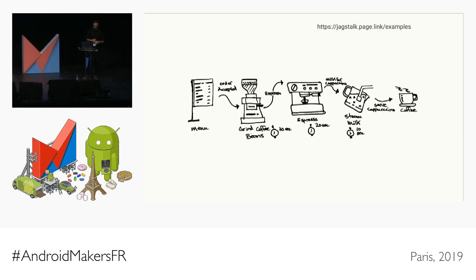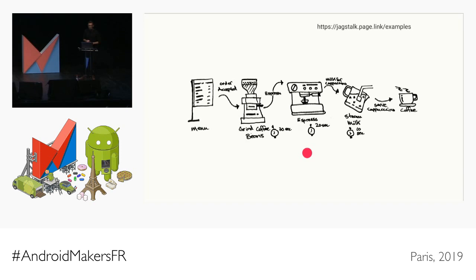Let's go back to the analogy. This first version is a very simple coffee shop — just one barista making only cappuccinos. A customer comes in, places an order, the barista takes it, walks over to the coffee grinder, grinds the beans, takes them to the espresso machine, pulls the espresso shot, puts that aside, steams the milk, then combines the espresso shot and steamed milk to create a cappuccino.